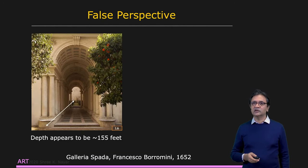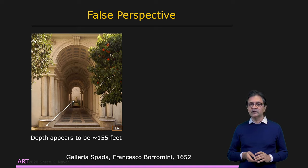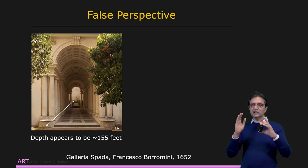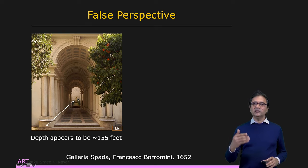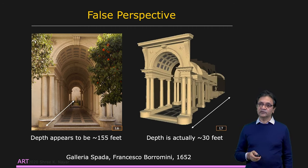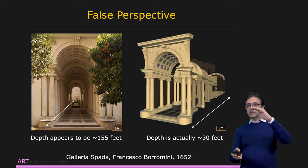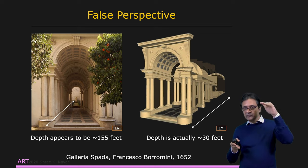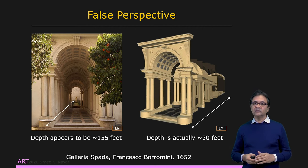Here's another interesting concept called false perspective. This is Galleria Spada by Francesco Borromini, a beautiful little gallery in Rome. You see a hallway with a sculpture at the end. Standing in front, you get the impression the sculpture is roughly 150 feet away, but it's actually only 30 feet away. The reason for this illusion is that the pillars of the archway are actually getting smaller with distance from the observer — it's a tapered archway. This creates the effect of false perspective, leading you to believe the object at the end is much further away than it actually is.